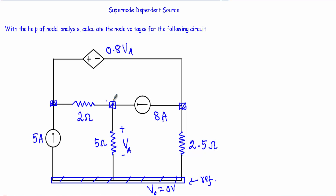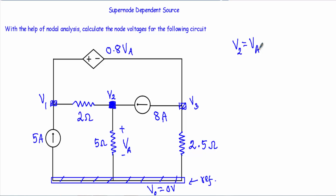After that I will assign node voltages to every node except the reference node. This node will have a voltage of V1, this node will have a voltage of V2, and this node will have a voltage of V3. Now look at node 2 — V2 is the node voltage, and VA will be the voltage drop across this 5 ohm resistor, which is connected between node 2 and the reference node. Therefore I can write V2 equals VA.